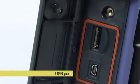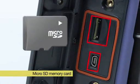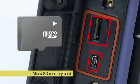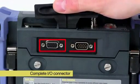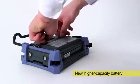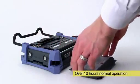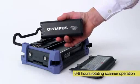The Nortec 600 has a USB port to transfer files to a computer, an onboard microSD memory card, a VGA output and a complete input-output connector. Its new, higher capacity battery allows over 10 hours of normal operation and from 6 to nearly 8 hours of rotating scanner operation.